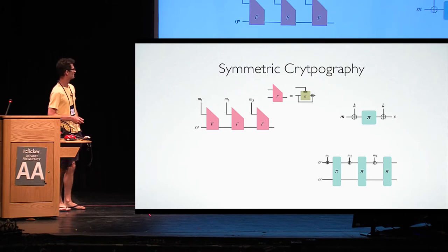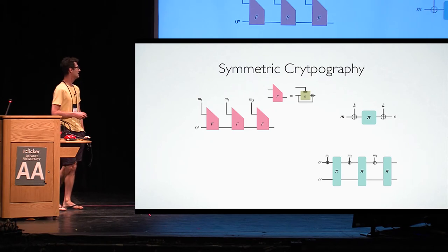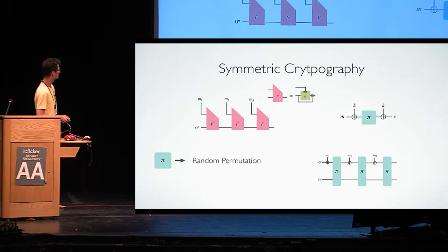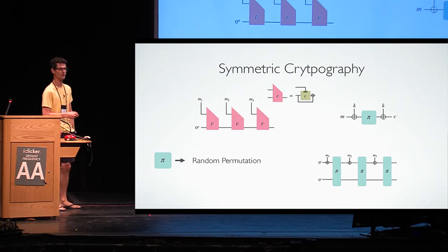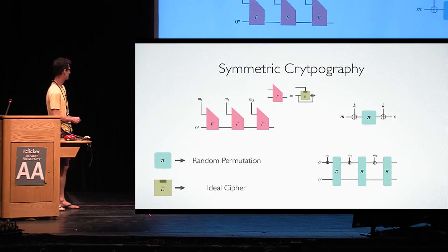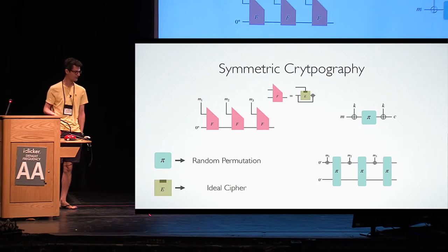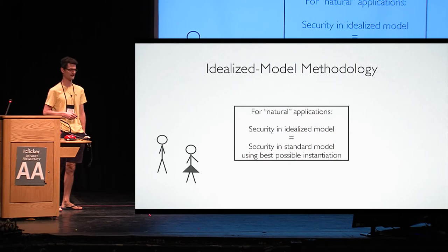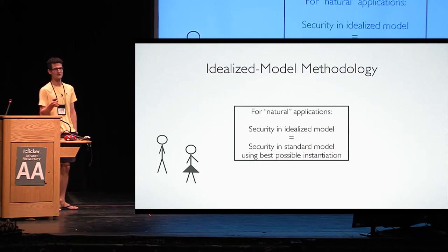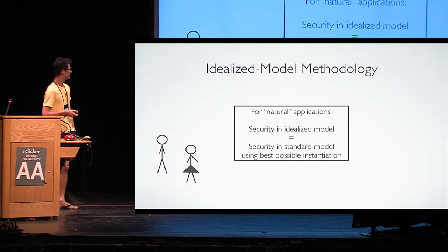Whenever there is a permutation involved, it's replaced by a public random permutation chosen uniformly at random from the set of all permutations, and that can be queried by everyone in the forward and backward direction. Just next to this, they see the idealized model methodology, which claims that for natural applications, whatever you prove in the idealized model, you hope that in the standard model you get similar security if you use a good instantiation for your idealized primitive.